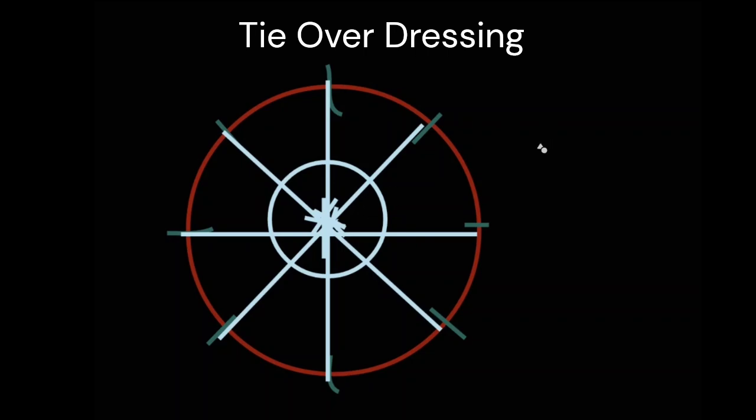What happens generally is graft loss is there at the periphery. So our focus should be that the pressure should be in these areas. That is why our tie-over dressing should be given in a different manner.